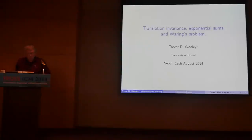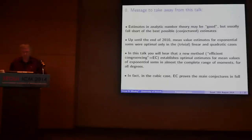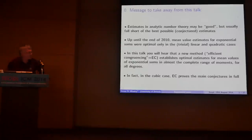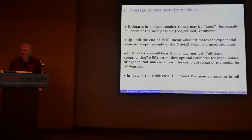This is a talk to try to tell you about some recent developments associated with exponential sums. I want to give you the message to take away before you see the talk, just because time tends to run away from me. As many people will say, in analytic number theory it's often the case that we get pretty good estimates, but they're not best possible estimates — in fact, far away from best possible estimates.